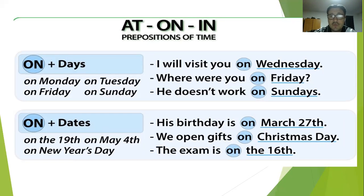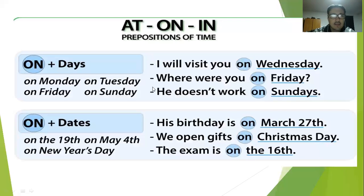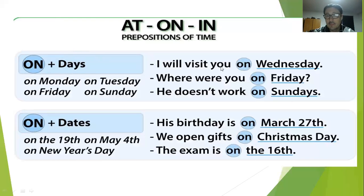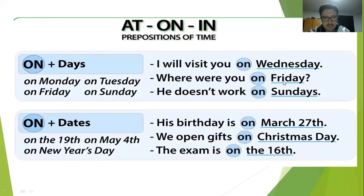On — we use it for days and dates. Es decir, lo usamos para días de la semana: Monday, Tuesday, Wednesday, Thursday, Friday, Saturday, or Sunday. Cualquier día de la semana lo vamos a ocupar con la preposición on. Ejemplo: I will visit you on Wednesday — te visitaré el miércoles.